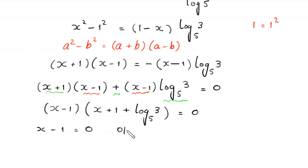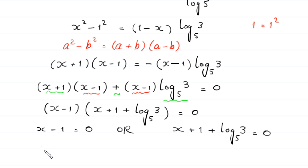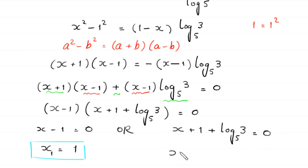From here, either x minus 1 equals 0, giving x equals 1 as the first solution, or x plus 1 plus log base 5 of 3 equals 0. From the second equation, moving the two terms to the right-hand side gives x equals negative 1 minus log base 5 of 3.